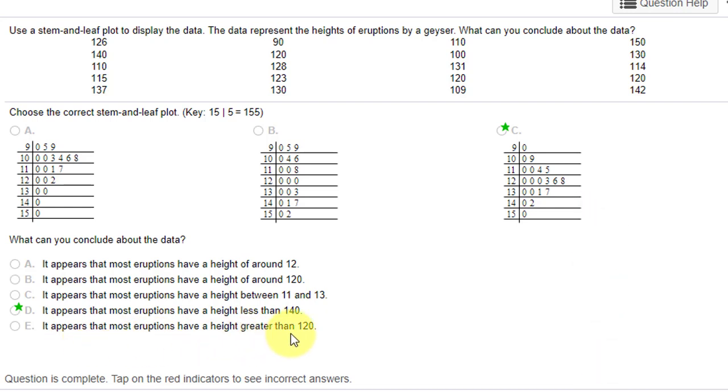that most eruptions have a height greater than 120. So if we look at 120 and parse it there, there's three, four, seven plus ten—that's ten eruptions higher than 120, which means there's ten eruptions at 120 or lower.